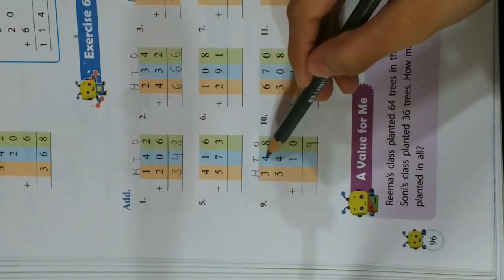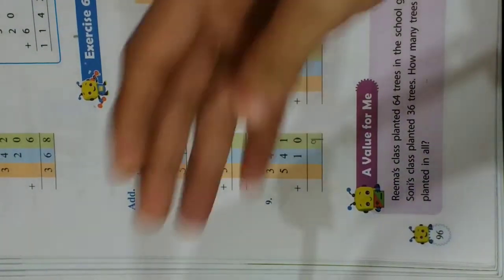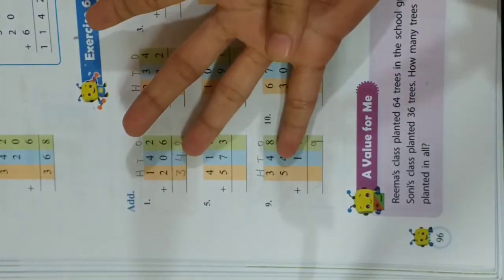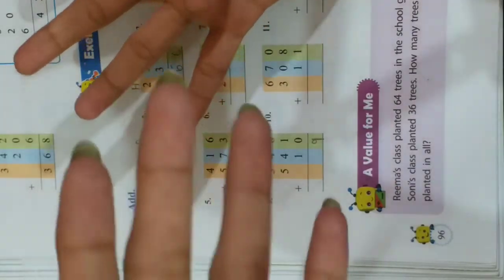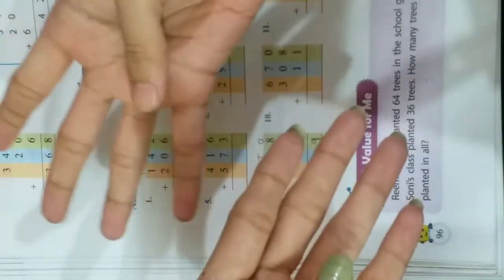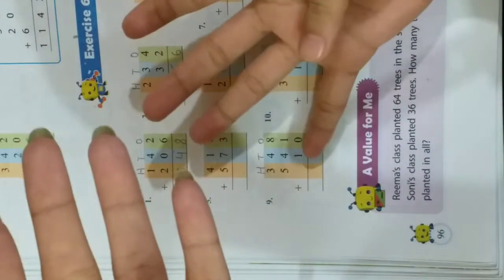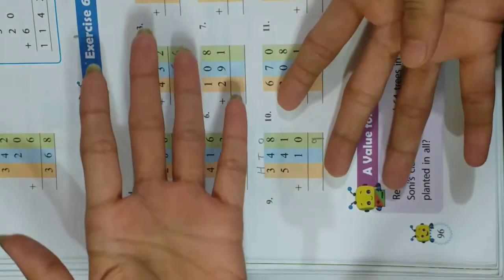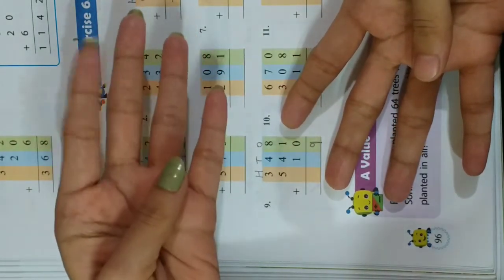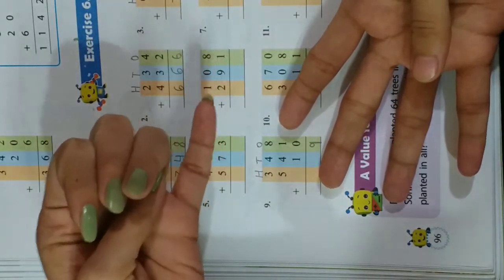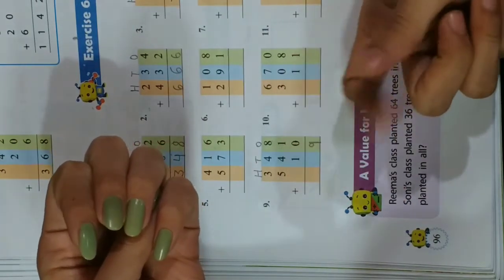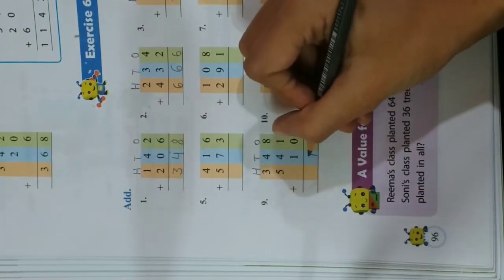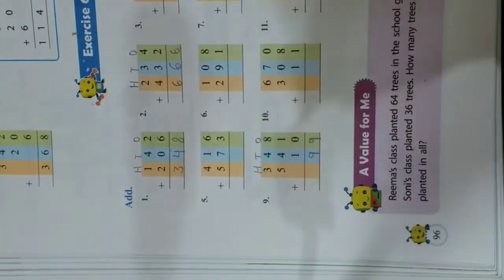Now have a look at tens place. On top you have 4 — take out 4 fingers. In the middle you have again 4 — take out 4 more fingers. Below you have 1. Count all: 1, 2, 3, 4, 5, 6, 7, 8, 9. You get 9, so write 9 over here.